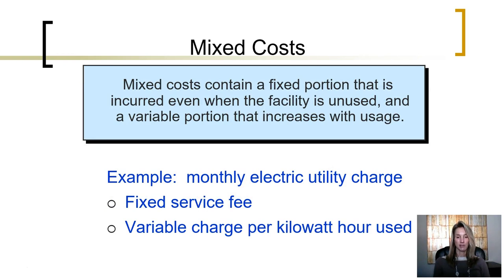Some costs, however, are mixed. There are some costs that we cannot classify solely as fixed, and we cannot classify them solely as variable either — they have mixed elements to them. Mixed costs contain a fixed portion that is incurred even when the facility is unused, and a variable portion that increases with usage. For example, a monthly electric utility charge: within that charge is a fixed service fee, and in addition, the utility charge increases per kilowatt hour of electricity used.